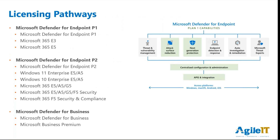Reviewing the licensing pathways: Defender for Endpoint Plan 1 is available as a standalone and is included in E3 and E5. Plan 2 is also available standalone and rolls up through the Windows 10/11 E5 license, as well as Microsoft 365 E5, E5 Security, and F5 Security and Compliance licenses. Defender for Business is available standalone for business users or included in the Business Premium license.